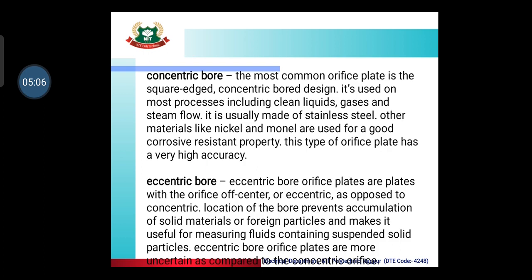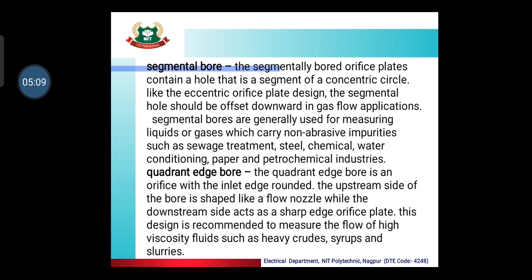The segmental orifice plate has a hole that is a segment of a concentric circle. Like the eccentric orifice plate design, the segmental hole should be offset downwards in gas flow applications. The fourth type is the quadrant edge bore orifice plate. The quadrant edge bore is an orifice with the inlet edge rounded — the upstream side of the bore is shaped like a flow nozzle while the downstream side acts as a sharp edge orifice plate. This design is recommended to measure the flow of high viscosity fluids such as heavy crudes and slurries.